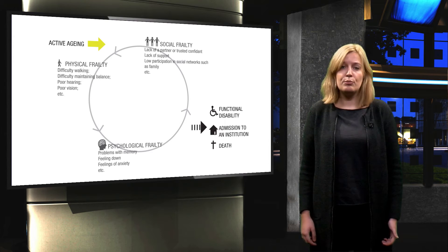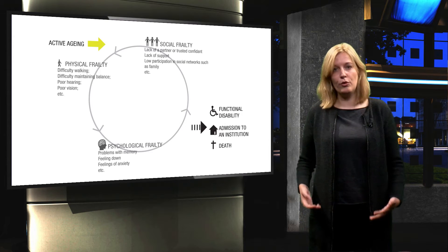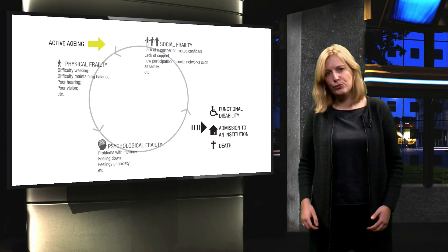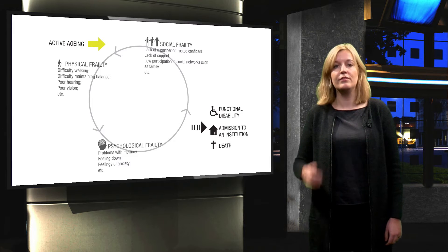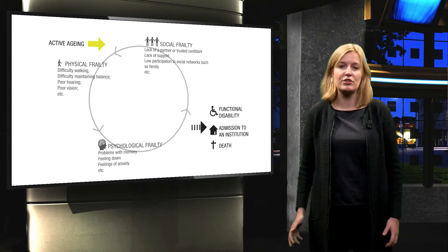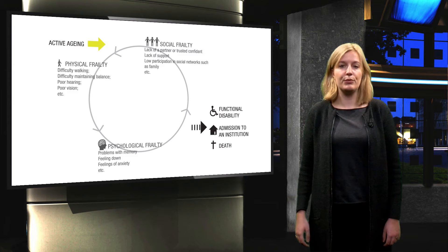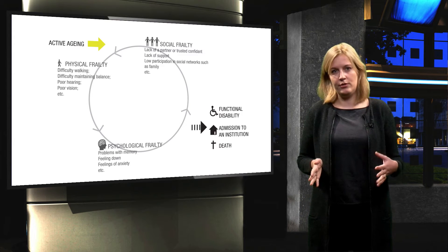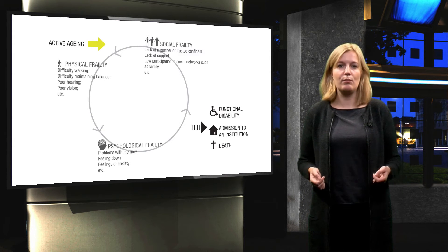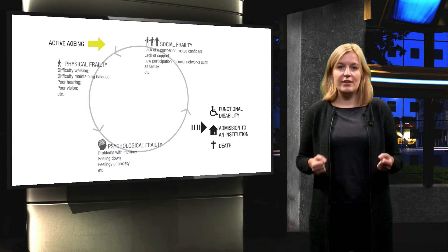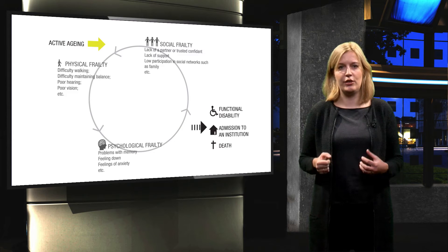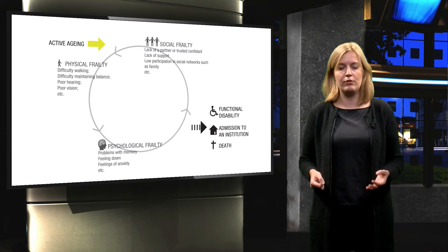Research has shown that the process of frailty can be reduced or prevented from worsening by active ageing. Urban design can be a powerful tool to encourage active ageing. The design of the built environment is particularly important for older people. With walking as their main mode of transportation, elderly are often limited to their nearby surroundings, and declining health can make them more susceptible to barriers. In this presentation, I will tell you more about neighbourhood design interventions that encourage active ageing among frail elderly.